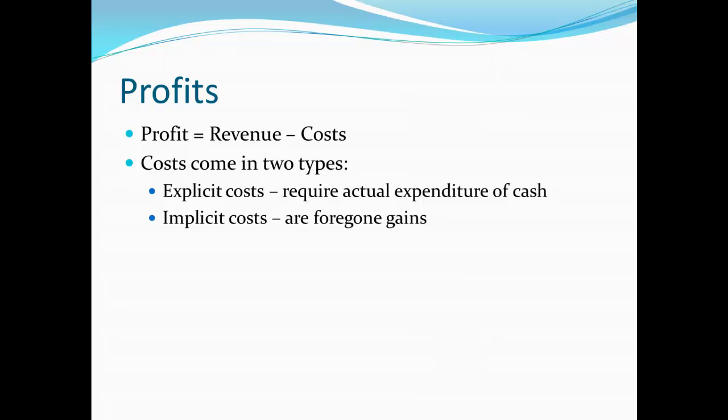Costs really come in two types. The first is what we call an explicit cost. The explicit cost requires some kind of actual expenditure of cash. For example, when I'm paying my workers, that is actually money that is leaving my business to go to these workers. Or when I pay for materials, or when I pay interest on a loan. These are all explicit costs that require the actual expenditure of cash.